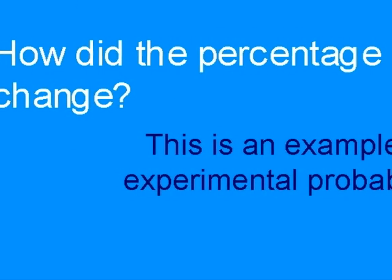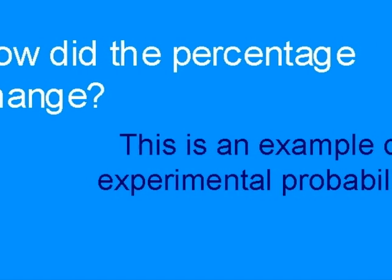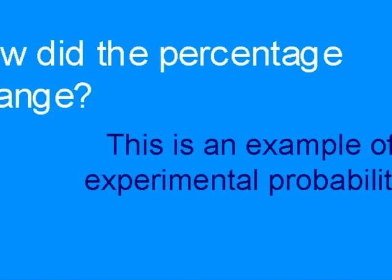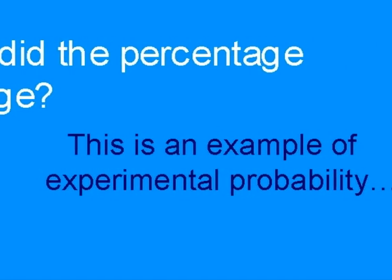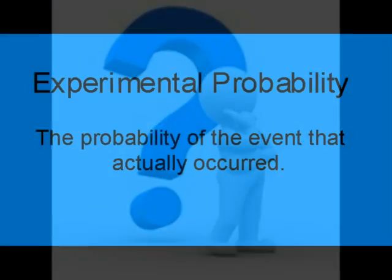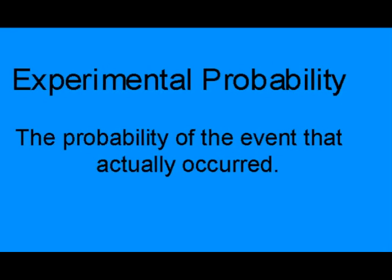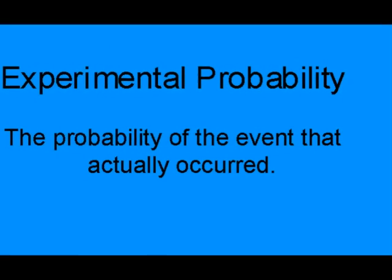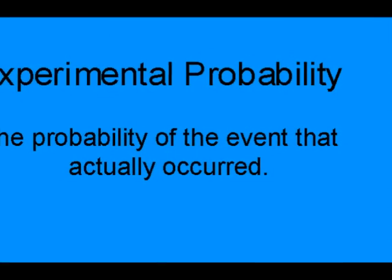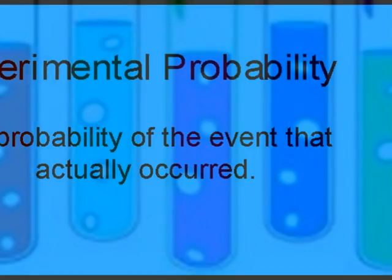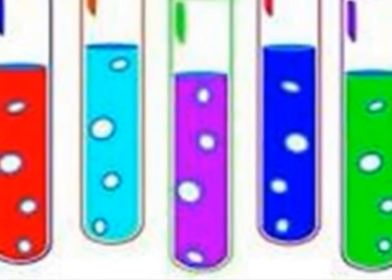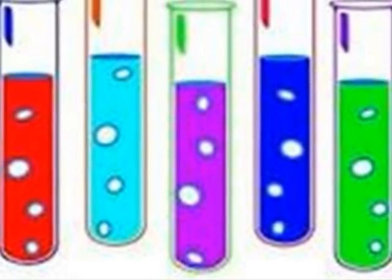How did the percentage change? This is an example of experimental probability — the probability of the event that actually occurred. Here, we have 5 experiments.